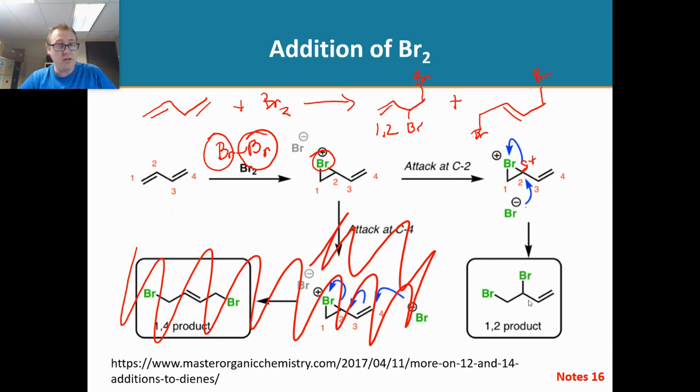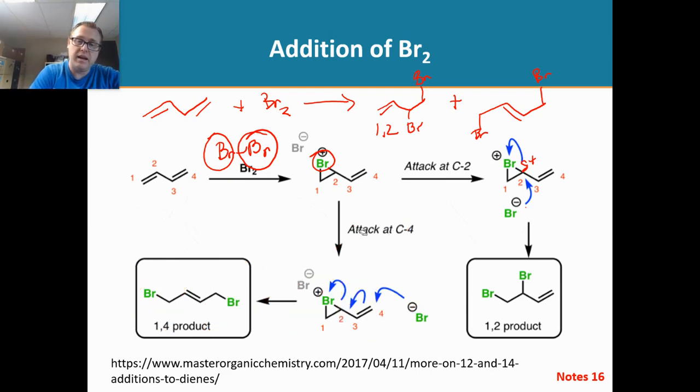But then we can also have the 1,4 product and that is done by looking at this intermediate right here. And what happens is that the bromide can come in and attack at carbon four.